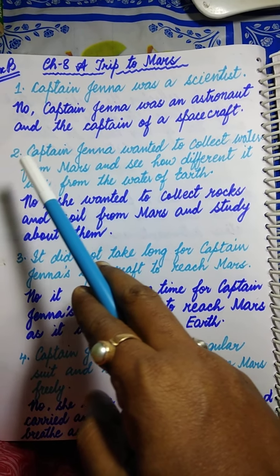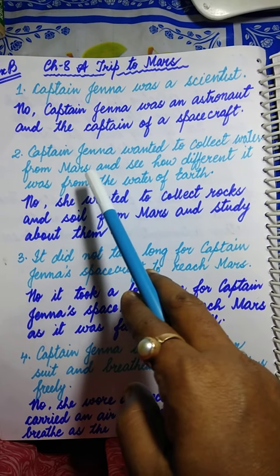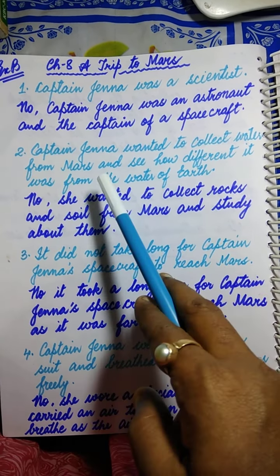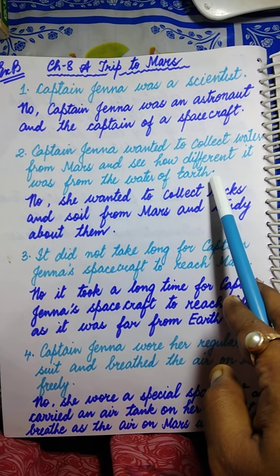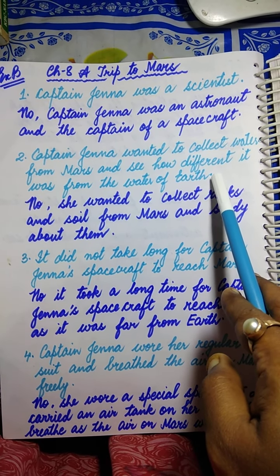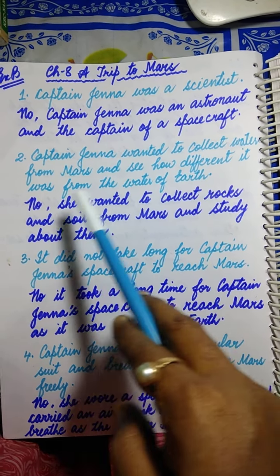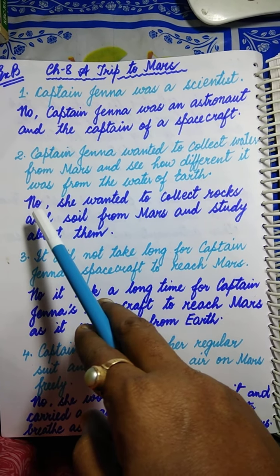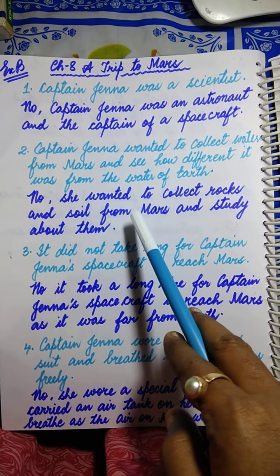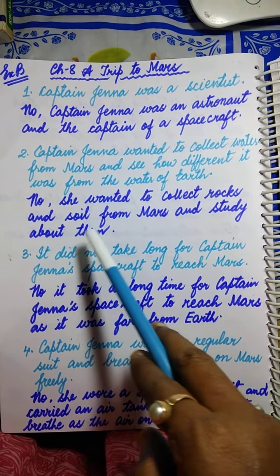Just see number 2: Captain Gina wanted to collect water from Mars and see how different it was from the water of the earth. This is also an incorrect sentence. When we correct it, we will write: No, she wanted to collect rocks and soil from Mars and study about them.